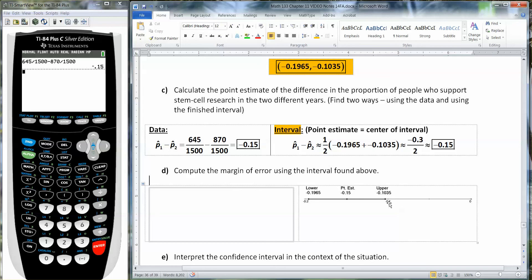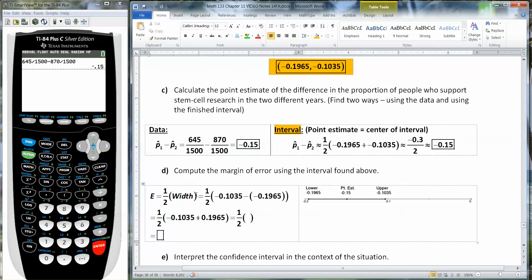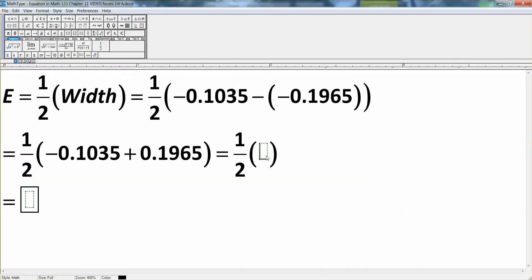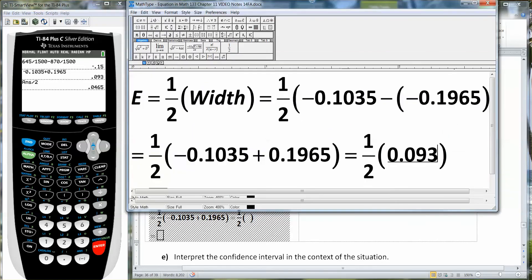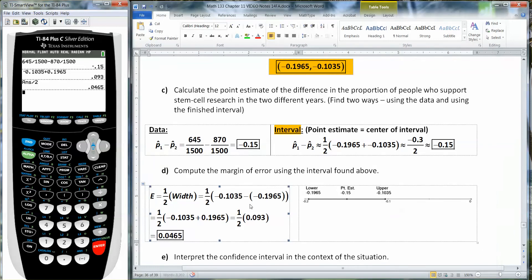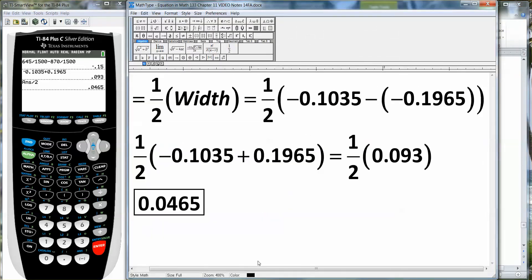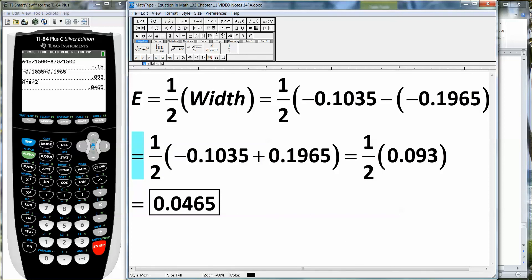Now the margin of error is the distance from the edges to that center. So to find that, you need to take your highest number, negative 0.1035 minus your lower number, which is negative 0.1965. And that means when you minus a minus like that, you're actually adding. So I'm going to take negative 0.1035 plus 0.1965 and I'll get 0.093. And then I want to divide that in half. So divide it by 2. And I'll get 0.0465. And in this particular problem, there was no approximation. They were actually all equal.